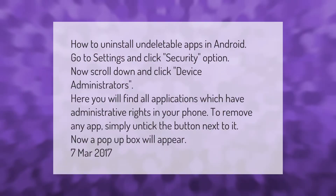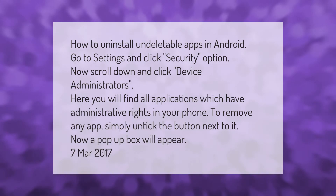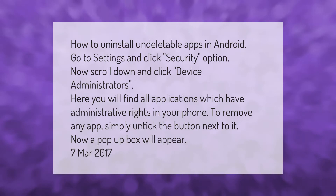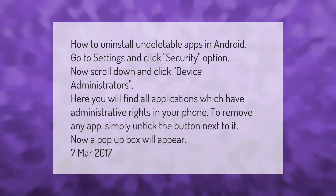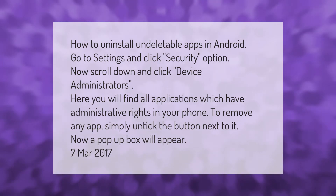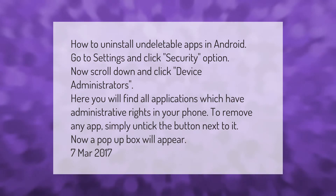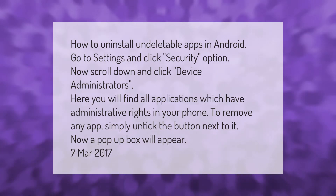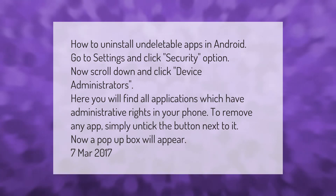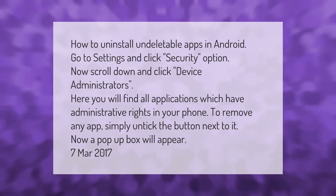How to uninstall undeletable apps in Android: go to Settings and click the Security option. Now scroll down and click Device Administrators. Here you will find all applications which have administrative rights in your phone. To remove any app, simply untick the button next to it. Now a pop-up box will appear.